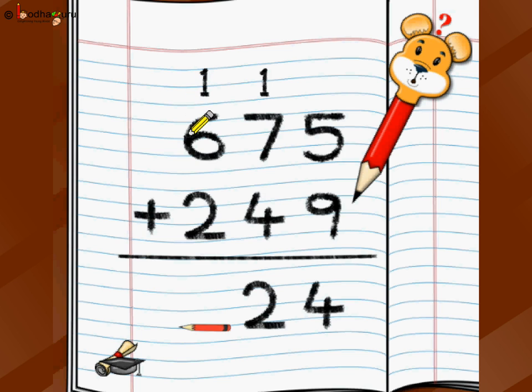Now you move to the hundreds position. Start doing 1 plus 6 is 7. 7 plus 2 is 9. That's it! So this big number also you were able to add very easily by just doing one position at a time, starting from ones position, then moving to the tens position, and then moving to the hundreds position.